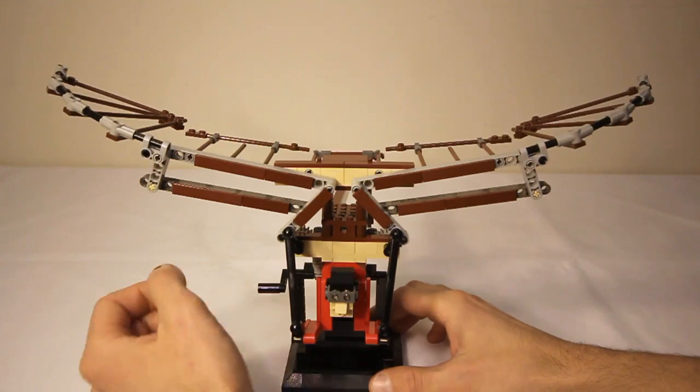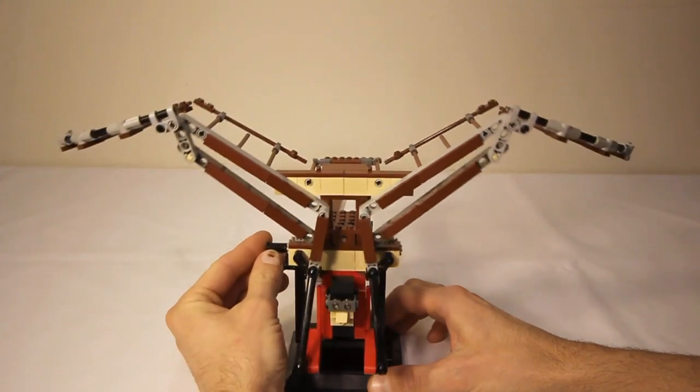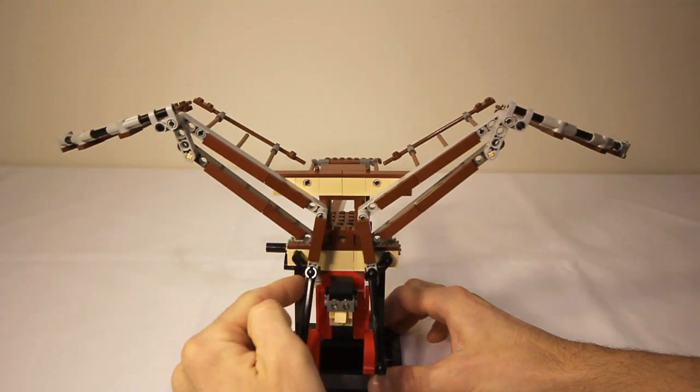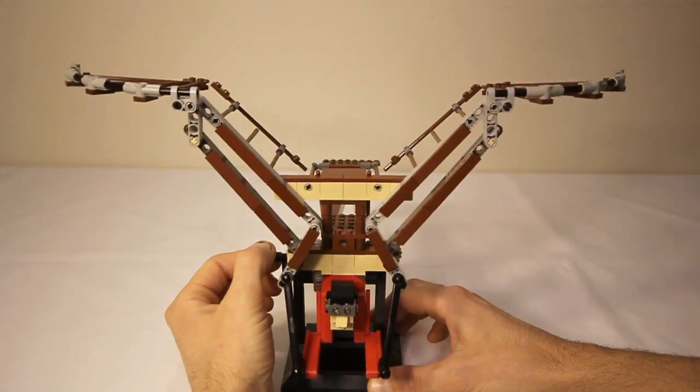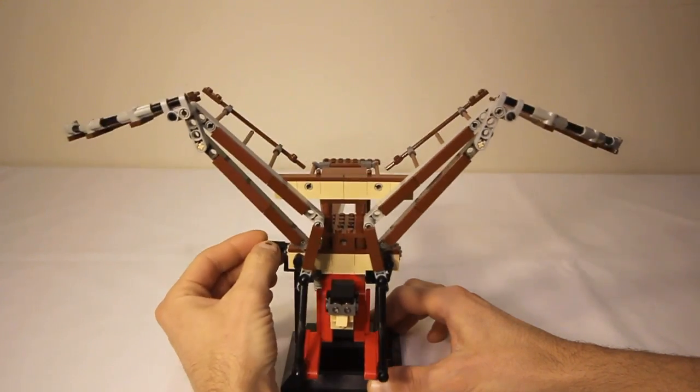The flapping of the wings is achieved through a pretty simple set of Technic lift arms, which you can see here attached to these cranks, which achieve a somewhat realistic flapping motion.